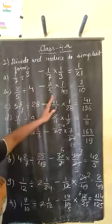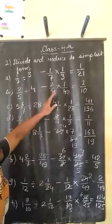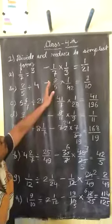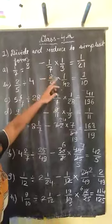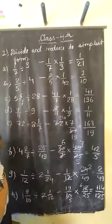After multiplication, we can multiply both numbers, numerator to numerator and denominator to denominator. 1 times 1, 7 times 3 is 21.